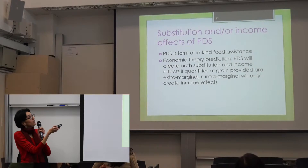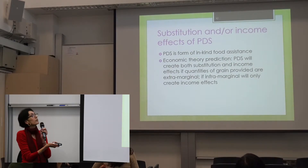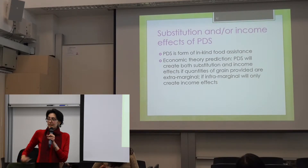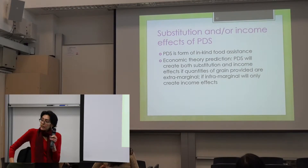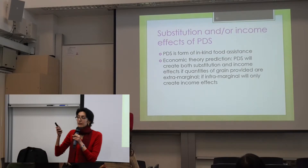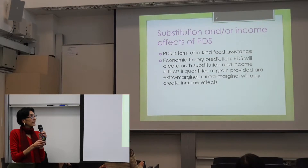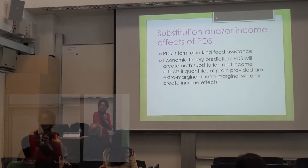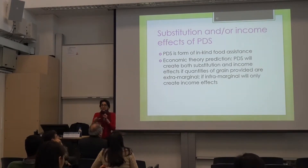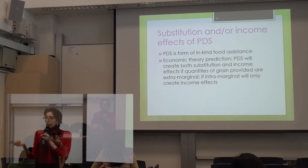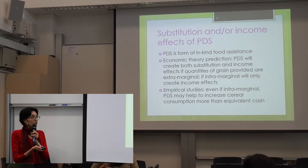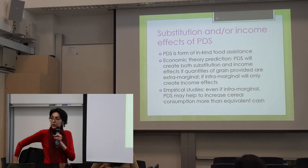For the PDS, which is a food subsidy, it can be seen as a form of in-kind food assistance because they have to buy the food to actually get the subsidy. Economic theory predicts that the PDS will create both substitution and income effects. If the PDS provided extra quantities of grain higher than what the family actually planned to consume, that creates substitution effects. Otherwise, if the quantity is intramarginal, it will only create income effects. From empirical studies, you see that even if the PDS were intramarginal, there is a possibility it would actually increase cereal consumption more than giving these families cash.